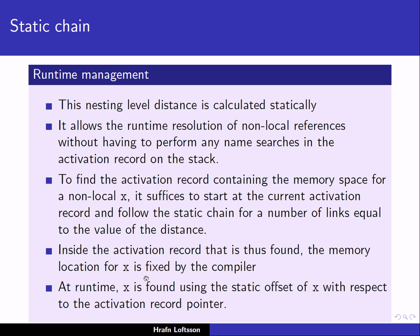Inside the activation record that is found, we have the memory location for X. This offset within the activation record is something that can be computed at compile time. The activation record pointer points to a fixed area in the activation record, and local variables are kept at some offset from this pointer — the compiler generates this offset so it can be referenced at runtime.